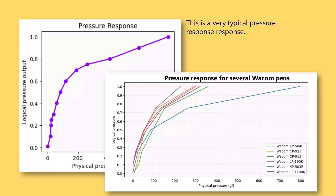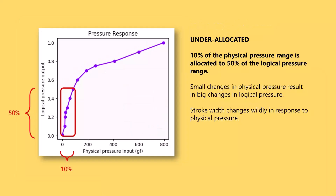The pressure response shape I started with bends up quite a bit. This is extremely common for EMR pens — in fact, every Wacom pen I've ever measured bends up in this way, and it's not limited to Wacom; this also seems to be the case with Huion and XP Pen and other brands. At the lower left of the pressure response is a steep slope: about 10% of the physical pressure range is allocated to about 50% of the logical pressure range. Small changes in physical pressure produce big changes in logical pressure and big changes in stroke width, which can make it feel like you don't have control.